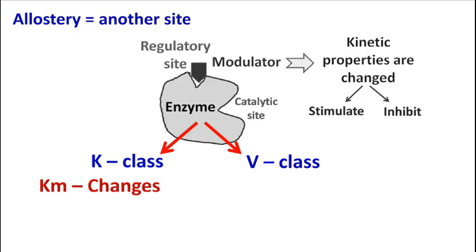The K-class allosteric enzymes are the ones where the modulator alters Km value and Vmax remains constant. For example, phosphofructokinase.